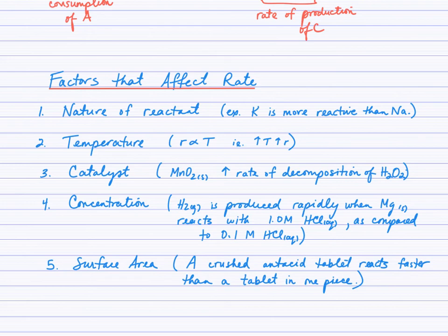Concentration certainly affects rate. An example would be hydrogen gas produced when a metal reacts with hydrochloric acid. If you have that metal react with one mole per liter hydrochloric acid compared to 0.1 molar acid, you'll definitely see bubbles being produced at a faster rate with the higher concentration. And the last one being surface area. Think of an antacid tablet and imagine a solid piece compared to a crushed piece. The crushed piece has a larger surface area and that definitely increases rate.